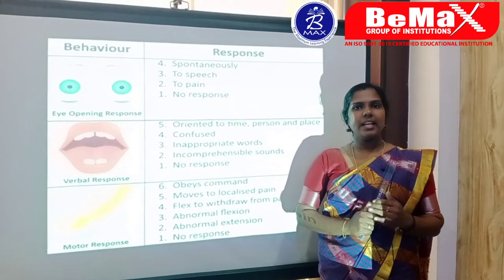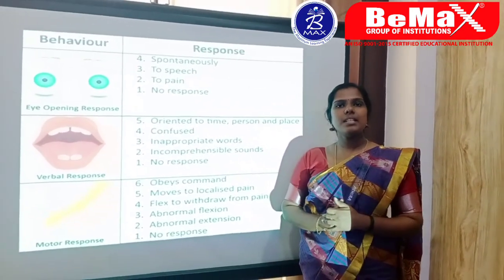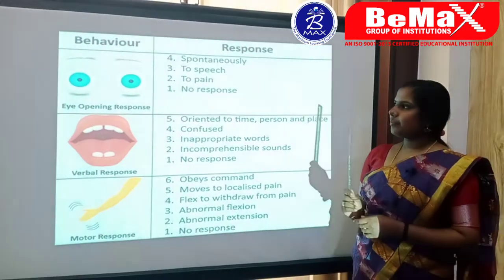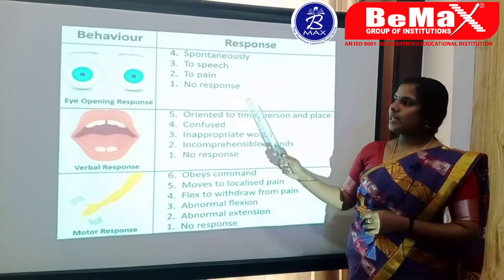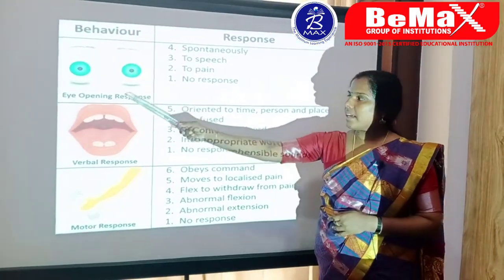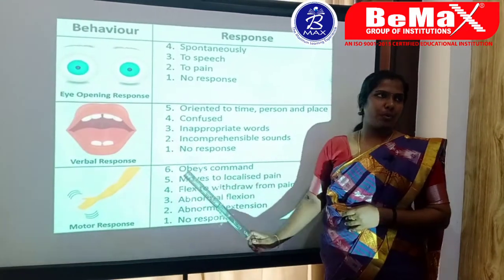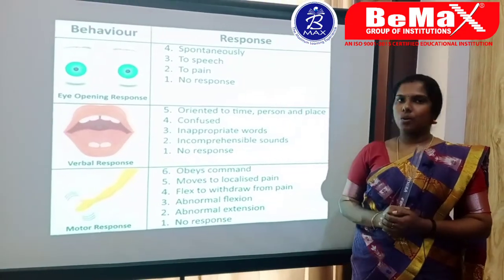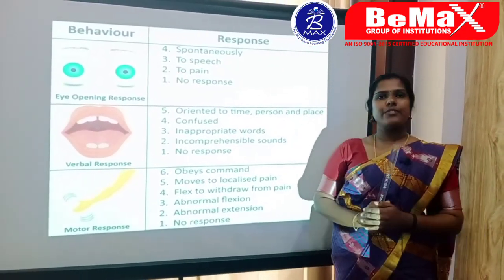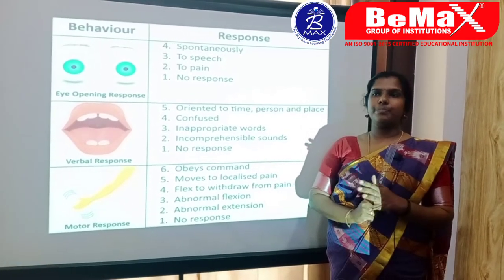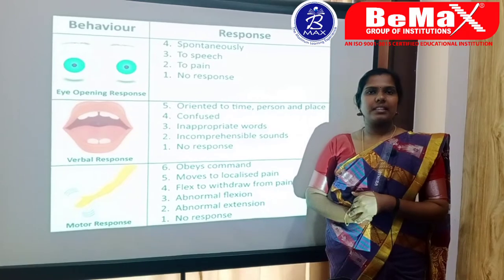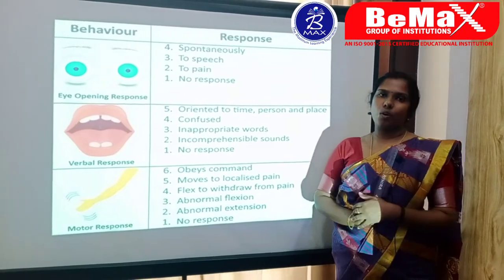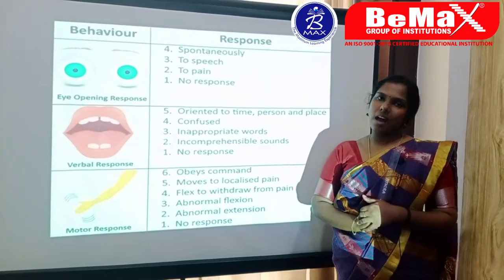In this question we have three responses to evaluate. The components of the GCS scale are eye opening response, verbal response, and motor response. The scoring system ranges from 1 to 15. A score of 15 indicates the patient is responsive. A score of less than 8 indicates the patient is in coma. A score of less than 3 indicates the patient is unresponsive.